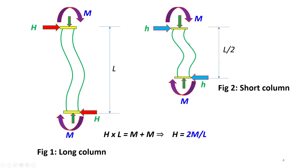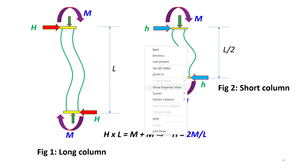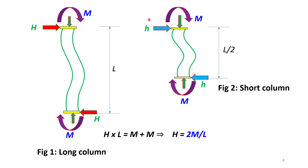Now consider a short column with length L/2 — half that of the previous long column. For simplicity, the same end moments M act at the two ends. The lateral shear at the ends will not be the same as before, so we use a new symbol, small h. Taking moments about the base: h × (L/2) = M + M, giving h = 4M / L. The lateral thrust in the short column is now two times that of the long column — this is why short columns experience higher lateral thrust due to end moments.